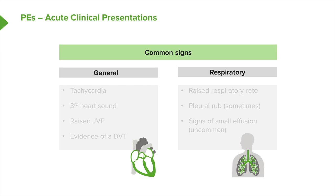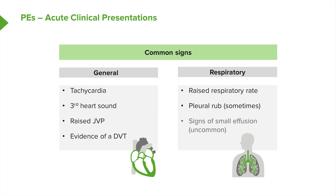With acute PEs, general signs will show some form of physiological disturbance: tachycardia, there may be a third heart sound, a raised JVP — all showing some degree of right heart strain. There might also be evidence of a pre-existing DVT, although in many patients that is not clinically apparent. Respiratory signs include a raised respiratory rate, a pleural rub over the affected area where infarction has occurred, and possibly signs of a small effusion, which is often associated with that pleural inflammation.